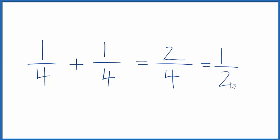We can think about this in terms of decimals. 1/4, or 1 divided by 4, is the same as 0.25. So 0.25 plus 0.25 equals 0.5, and 0.5 is the same as 1/2.